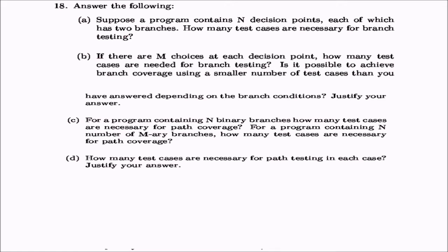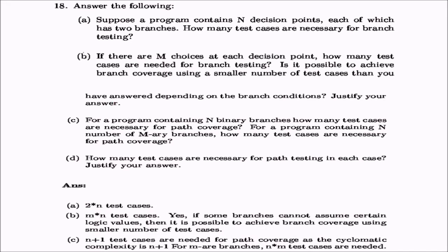For a program containing n decision points each with two branches, how many test cases are needed for branch testing? The answer is 2^n. If there are n choices at each decision point, the number of test cases is n×n. Is it possible to achieve branch coverage with fewer test cases? Yes — if some branches cannot assume certain logic values, branch coverage can be achieved with a smaller number of test cases.